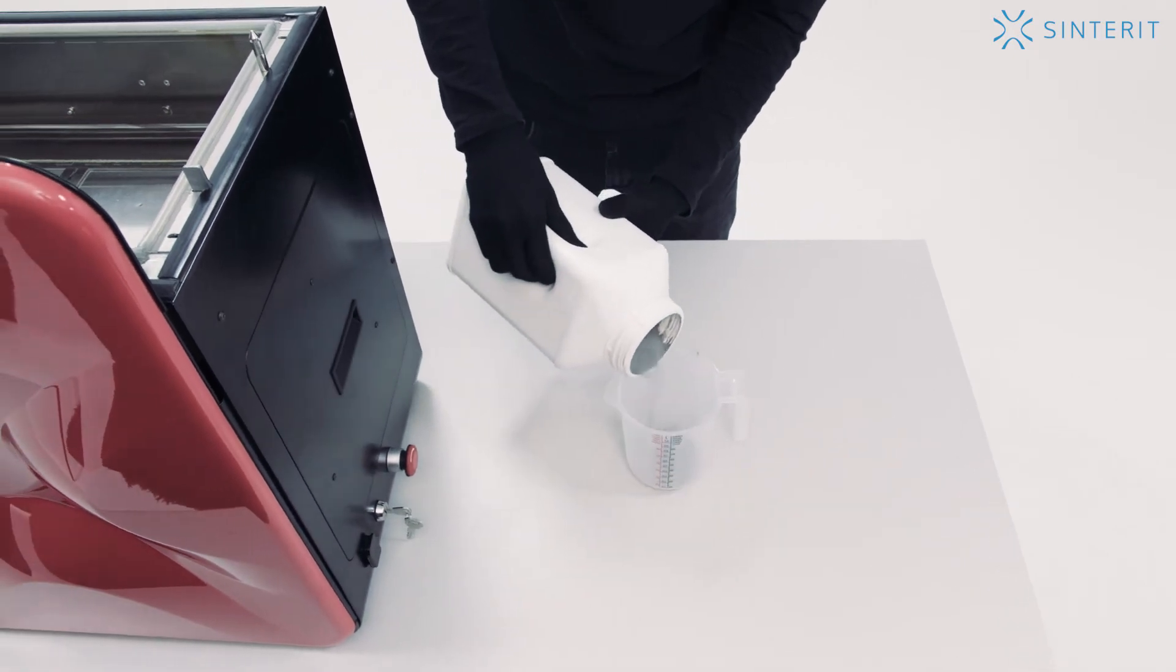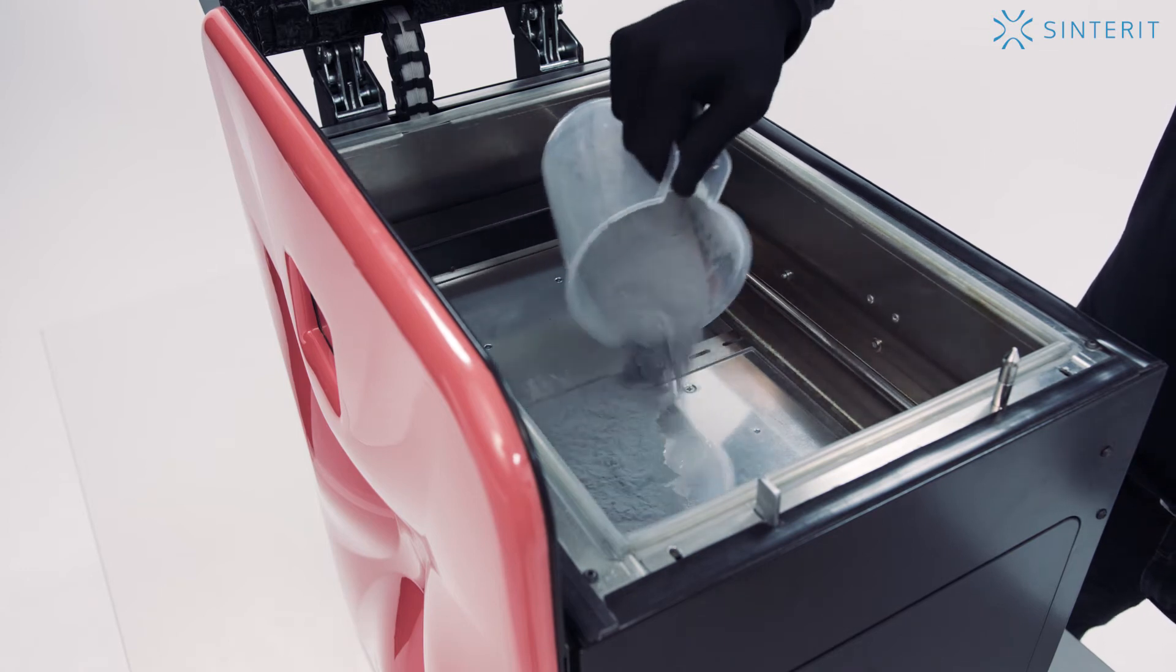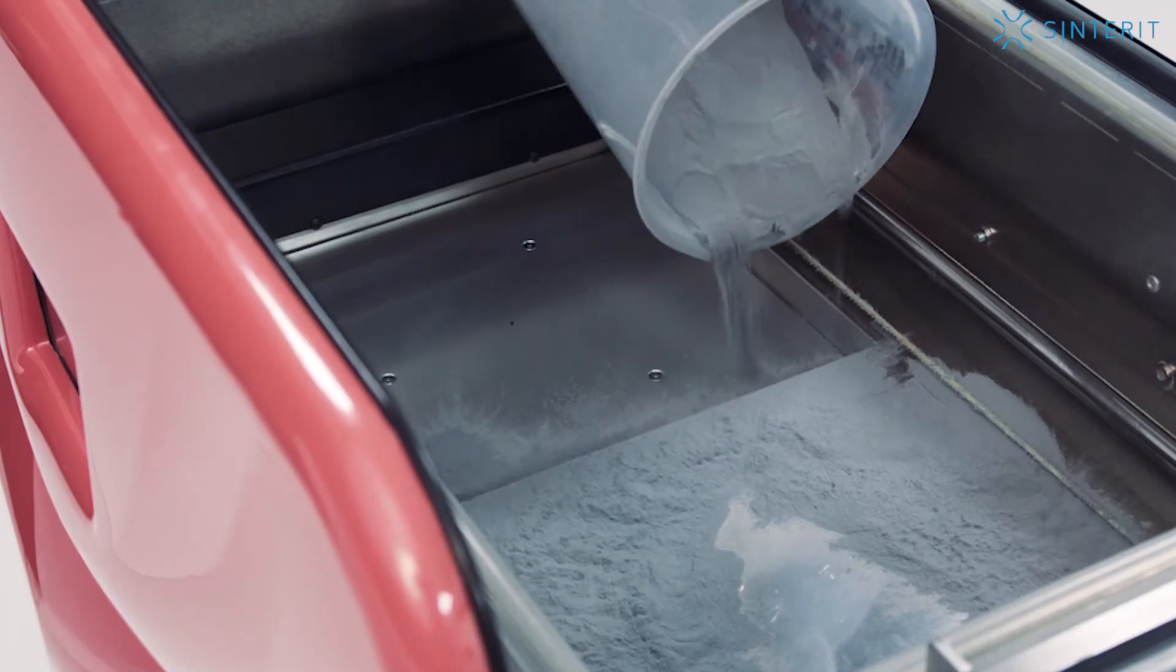If we want to carry out our first printing using the FlexaBlack material, then we should first spill a small amount of the PA12 material on the edges of both beds.